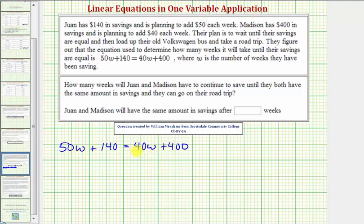If we want to undo or eliminate the 40W on the right side of the equation, we'd have to subtract 40W from both sides of the equation. So let's start by doing this. Here we have 50W minus 40W, that's 10W. So we have 10W plus 140 equals, notice this difference is zero, so on the right side we just have 400.